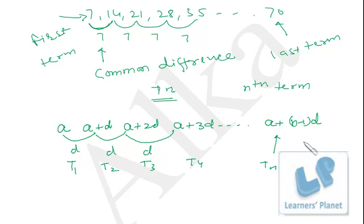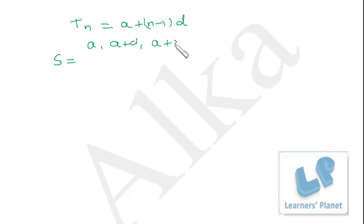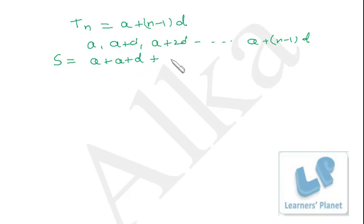Similarly, we can find the formula for the sum of all terms. Assuming the arithmetic sequence is a, a+d, a+2d, ..., a+(n−1)d, the sum S is: a + (a+d) + (a+2d) + ... + a+(n−1)d. Collecting terms, a appears n times giving na, and the remaining terms are d + 2d + 3d + ... + (n−1)d.